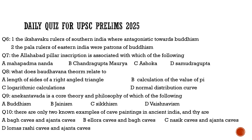Question six has two statements. Statement one: The Ikshvaku rulers of southern India were antagonistic towards Buddhism — this is incorrect. Statement two: The Pala rulers of eastern India were patrons of Buddhism — this is 100% true. So for question six, only the second statement is correct.